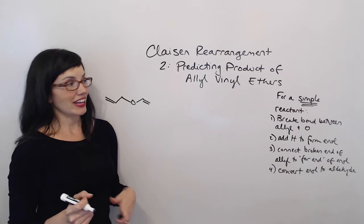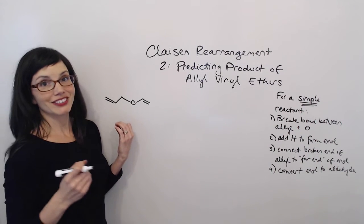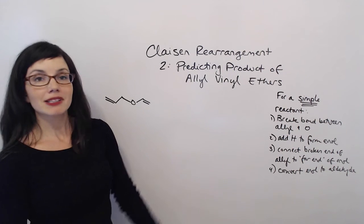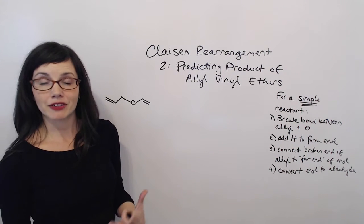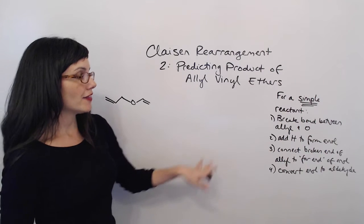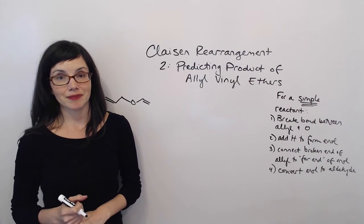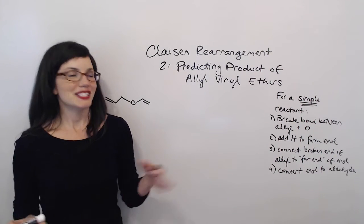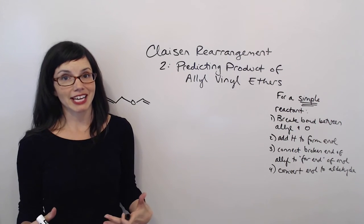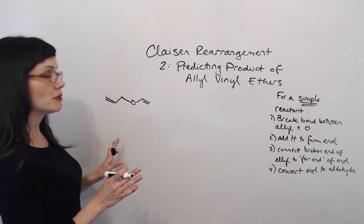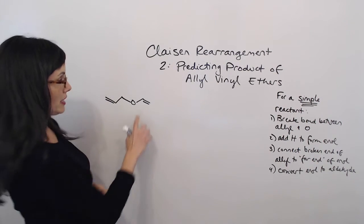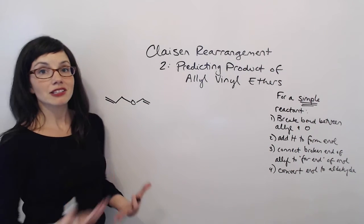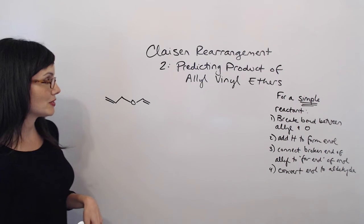Now let's look at how to handle an allyl vinyl ether. I've just changed the steps a little bit, because we're dealing with a vinyl group instead of a phenyl group, and there is one extra step at the end. And again, please believe me — these steps only work to predict accurate products if we have the most simple form: just a vinyl group with no extra substituents, and just an allyl group with no extra substituents.